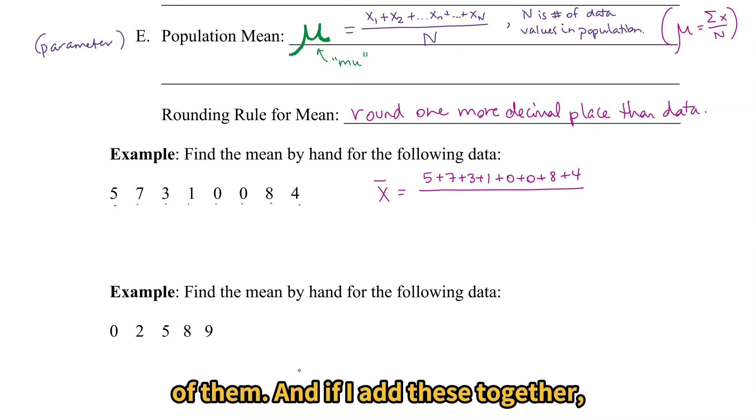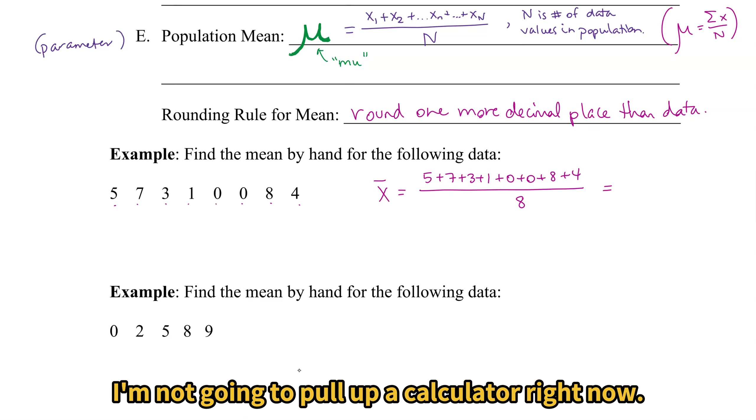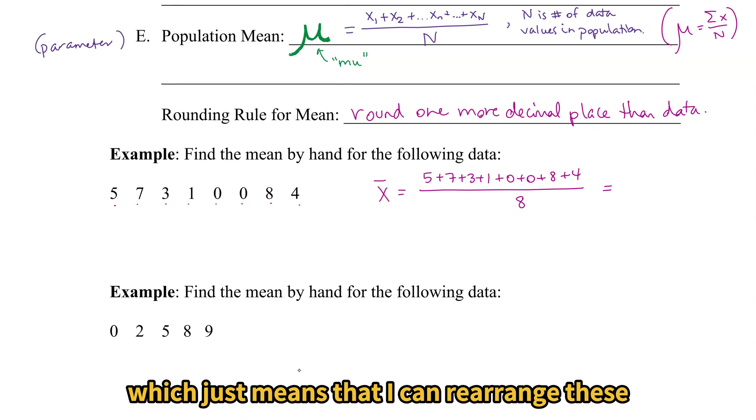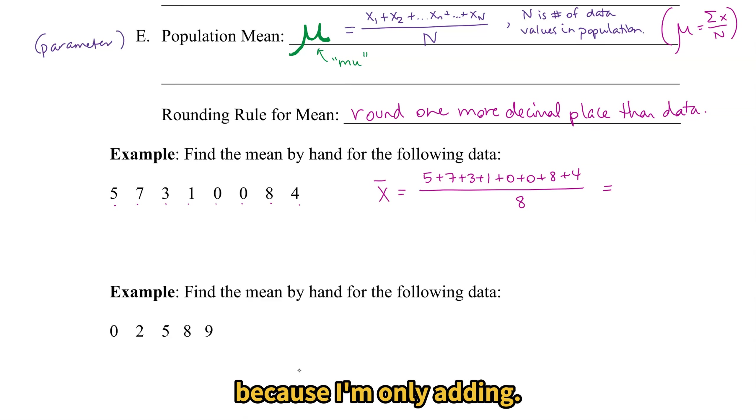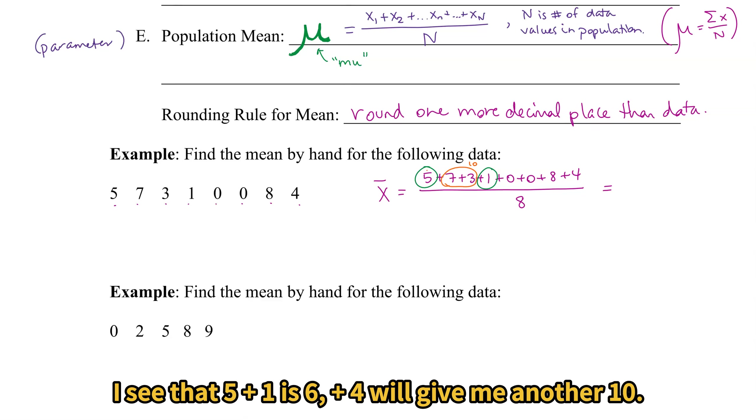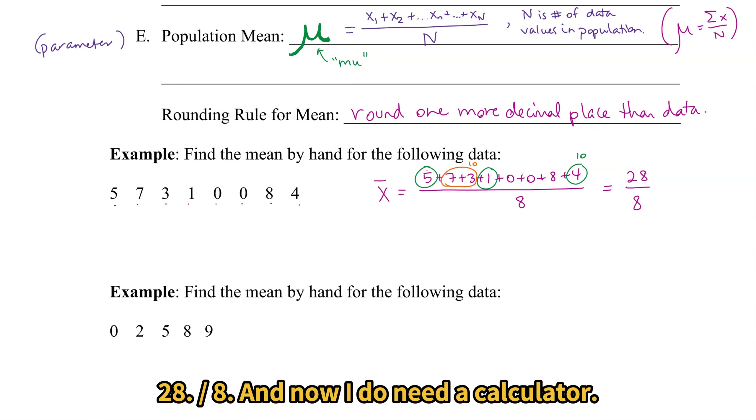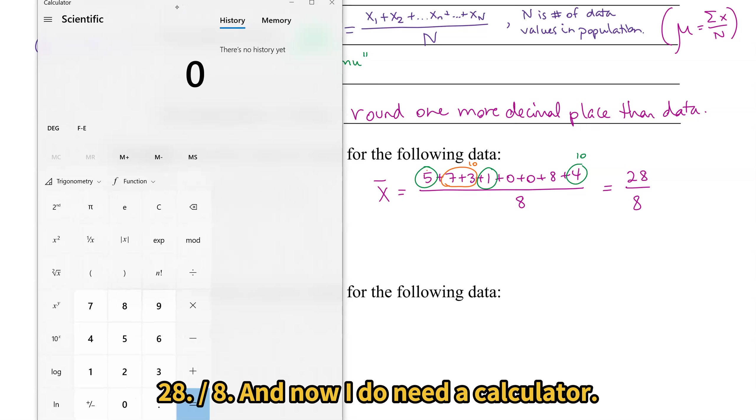But we'll start out adding them and divide by how many we have. 1, 2, 3, 4, 5, 6, 7, 8 of them. And if I add these together, I'm not going to pull up a calculator right now. I'm just going to use adding. And I'm also going to really make use of the commutative and associative properties. Which just means that I can rearrange these and add them up in any order that I want to. Because I'm only adding. So 7 plus 3 will give me 10. I see that 5 plus 1 is 6, plus 4 will give me another 10. And then adding 0, 0, 0, and 8 is 8. So I have two 10s and an 8. 28 divided by 8. And now I do need a calculator. I don't want to do long division.